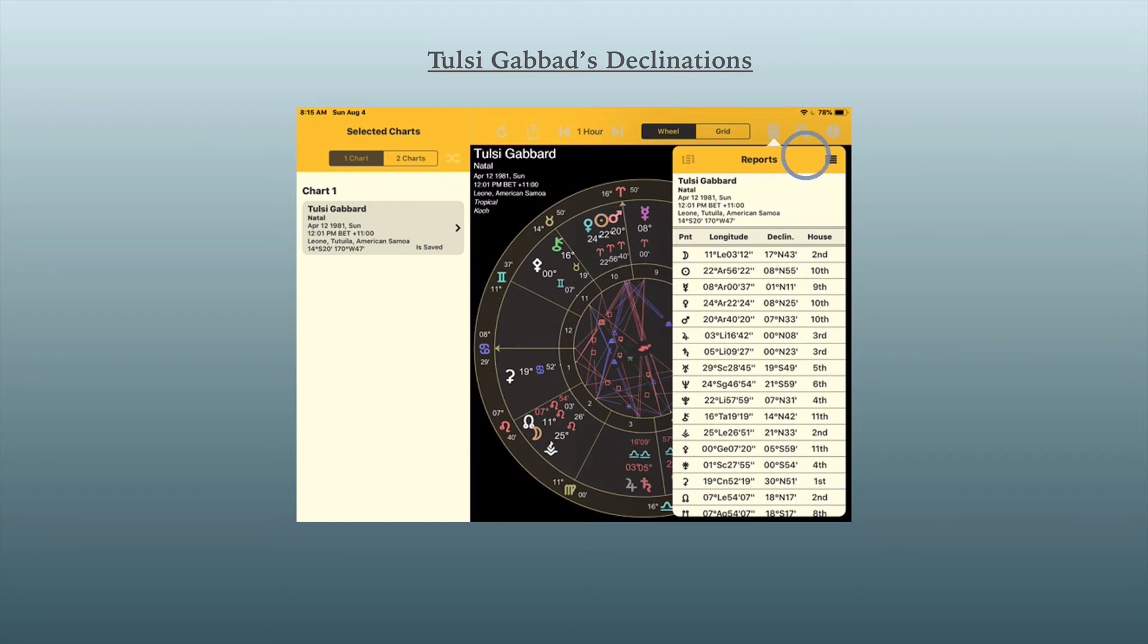Oh, I had this one other thing. If you don't know anything about declinations and you're a student of astrology, you need to learn about declinations and find out where to get them. I use an app on my iPad which is called Astro Gold, and it's a quick area to get declinations. Here's Tulsi's declinations. And sometimes you can just see things that you can't see in the regular chart.